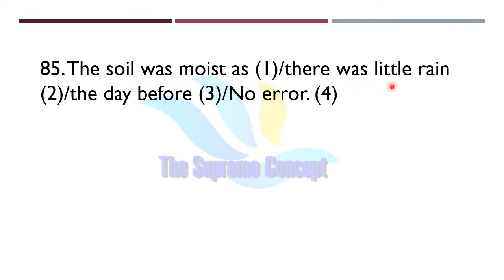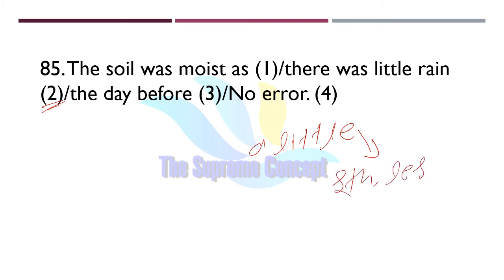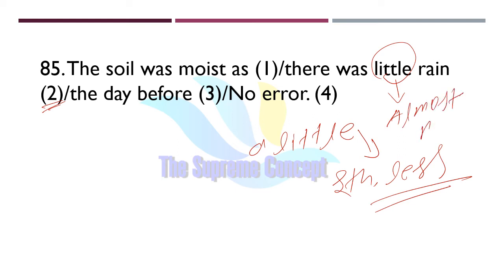Question number 85: 'The soil was moist as there was little rain the day before.' The error lies in option two — we will use 'a little' instead of 'little'. 'A little' means something less in amount — something is there. 'Little' alone means almost nothing. Since the soil was moist, there was some rain, so 'a little' is correct.